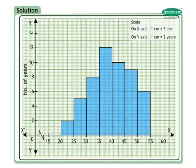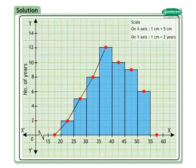The scale taken is 1 cm equal to 5 cm of rainfall on the x-axis and 1 cm equal to 2 years on the y-axis. Mark the midpoint of the upper side of each rectangle of the histogram, then take one additional rectangle of height zero preceding the first rectangle and one more succeeding the last. Join the successive points by straight lines to get the desired frequency polygon showing rainfall distribution.